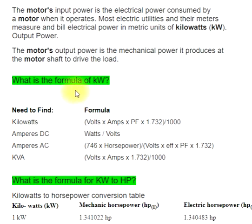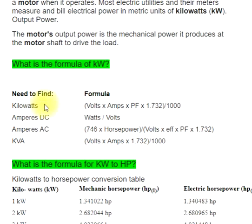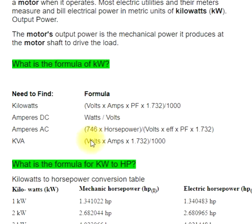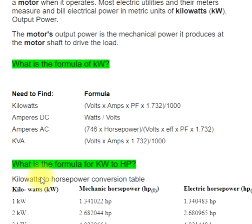What is the formula of KW? Formula: kilowatts = volts x amps x PF divided by 1.732 x 1000 (for AC amperes). DC watts = volts x amperes. AC: 746 x horsepower = volts x PF divided by 1.732. kVA = volts x amps divided by 1.732 x 1000.